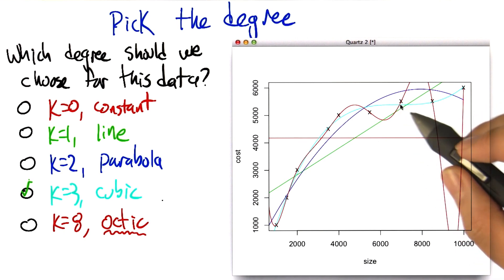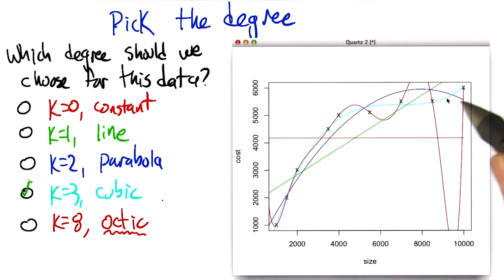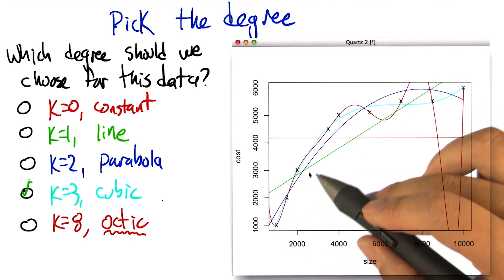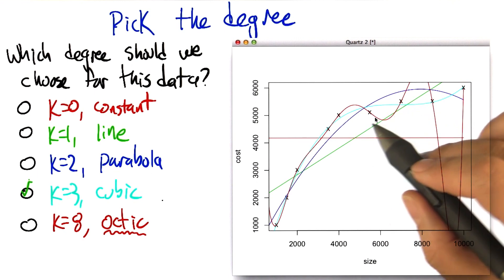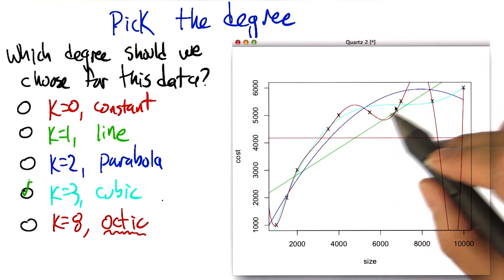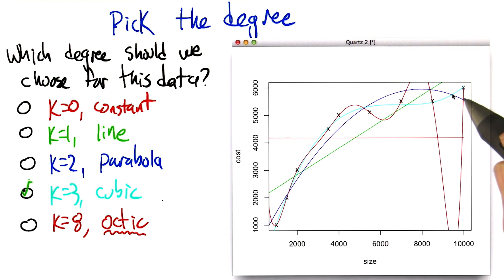Right, so it sort of seems like it's overkill, especially that it's doing these crazy things between the points. Whereas the cubic one, even though it clings pretty close to the points, it stays between the points, kind of between the points. Which seems like a really smart thing.